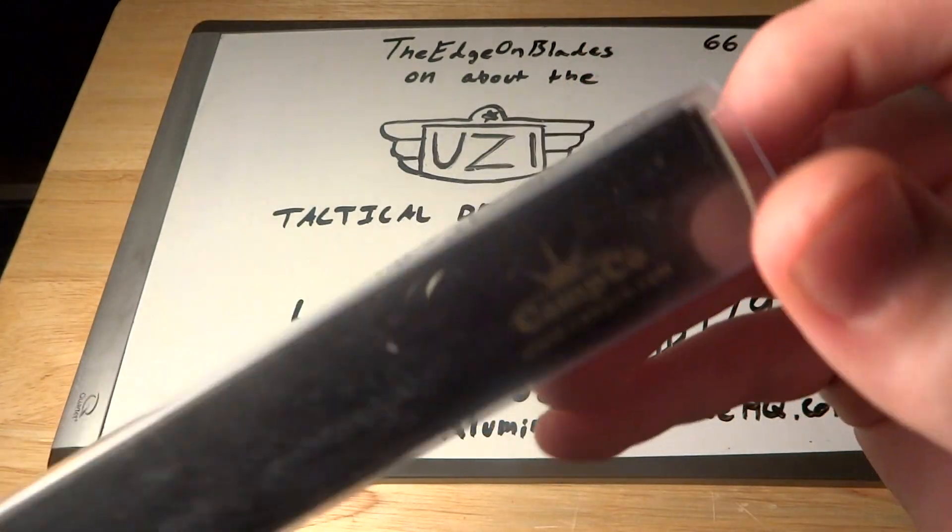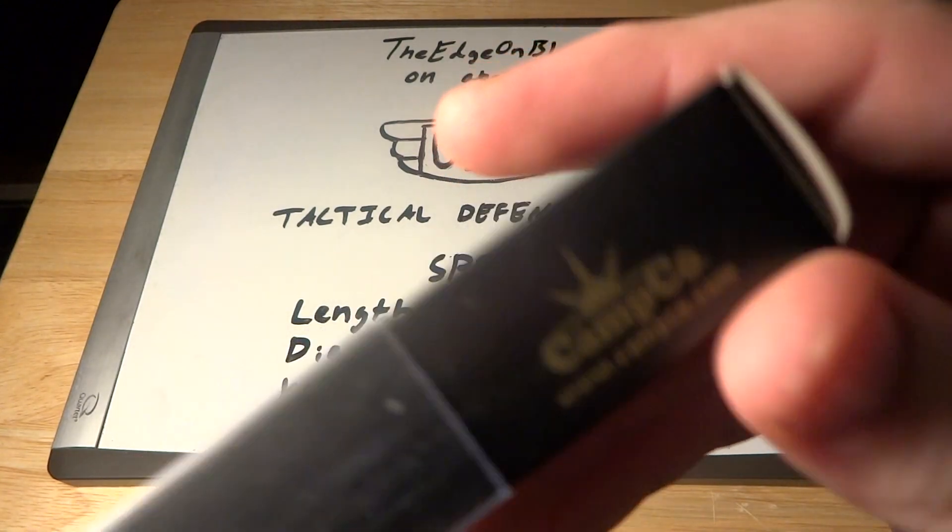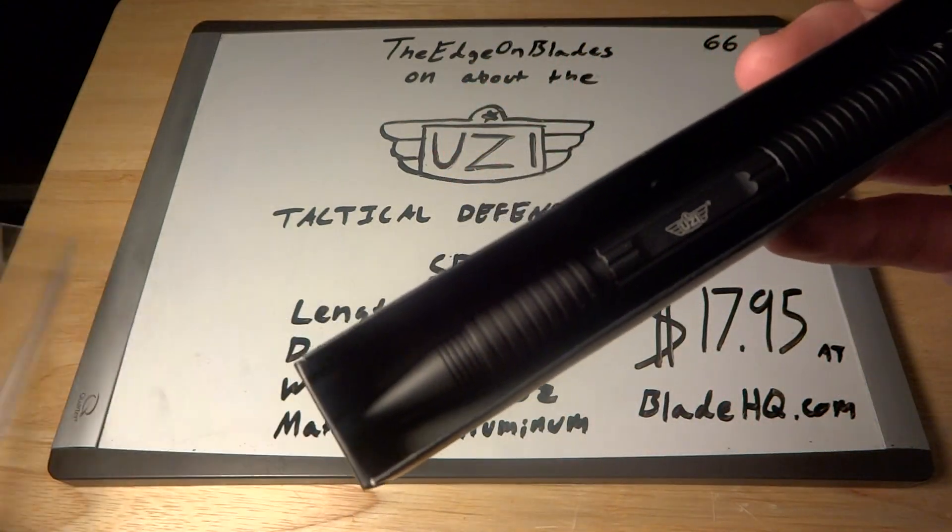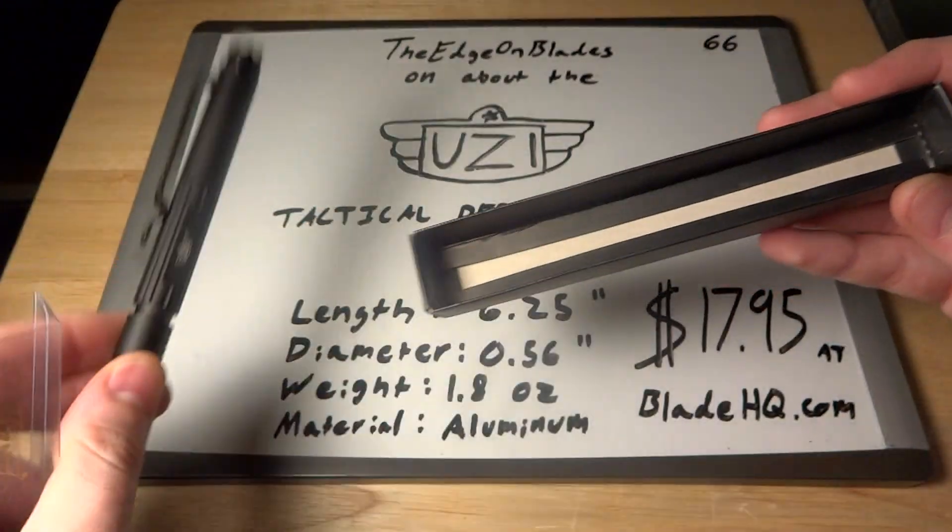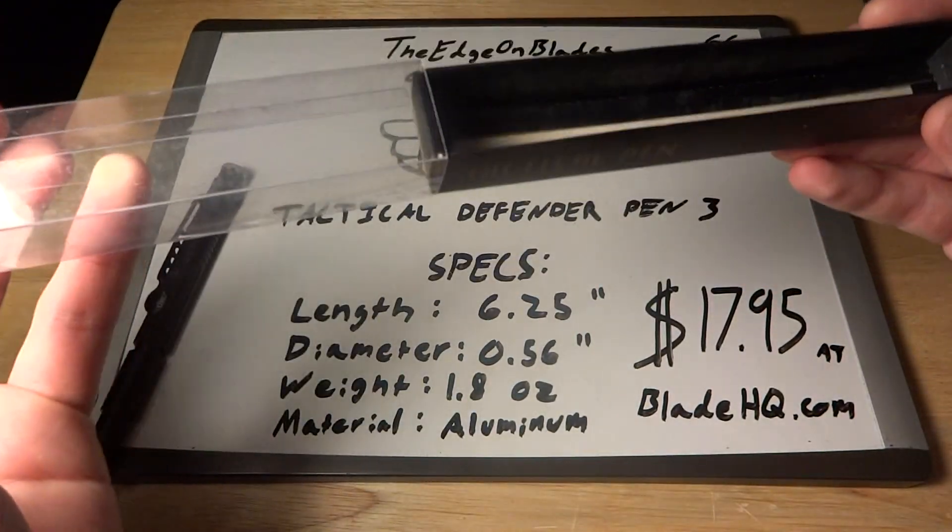You can see right there, campco.com. You'll probably see it better, but here's the pen itself, comes in this little plastic sleeve, which we will put aside.